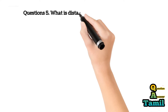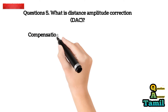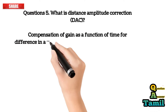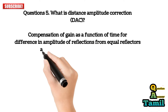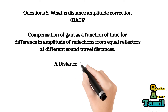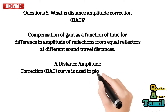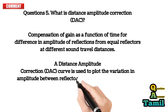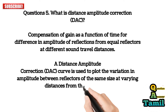Question 5: What is Distance Amplitude Correction (DAC)? Compensation of gain is a function of time for the difference in amplitude of reflections from equal reflectors at different sound travel distances. A Distance Amplitude Correction (DAC) curve is used to plot the variation in amplitude between reflectors of the same size at varying distances from the transducer.